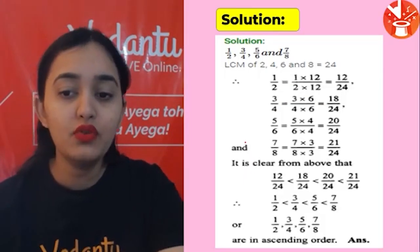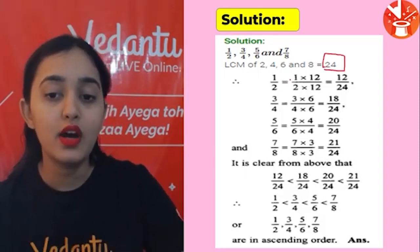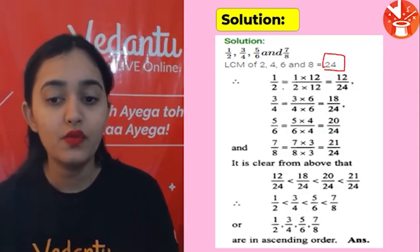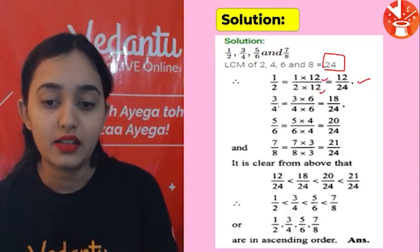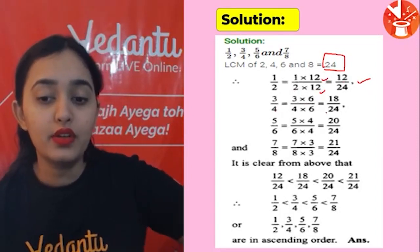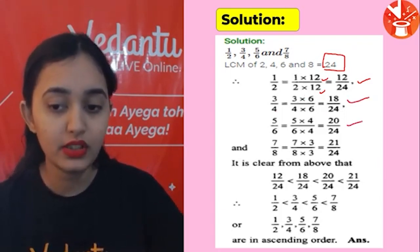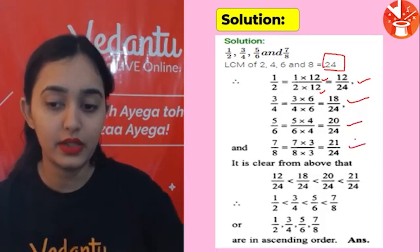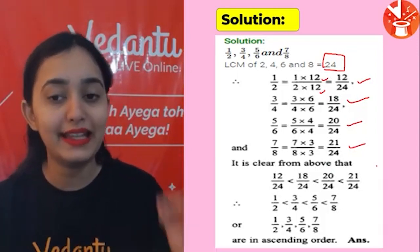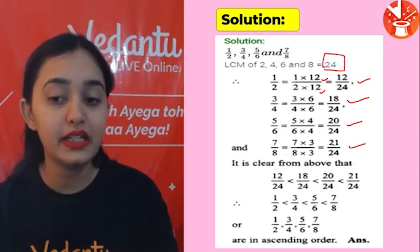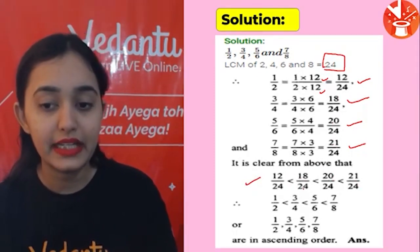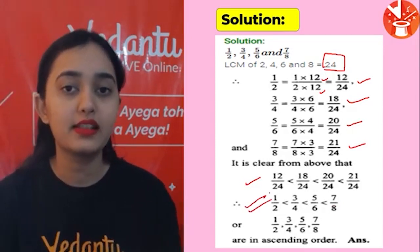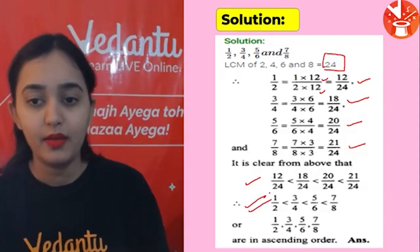LCM of 2, 4, 6, and 8 is 24. Converting: 1/2 = 12/24, 3/4 = 18/24, 5/6 = 20/24, and 7/8 = 21/24. Ab comparison karo — 12, 18, 20, 21 mein sabse chota 12 hai. So ascending order is: 1/2 < 3/4 < 5/6 < 7/8.